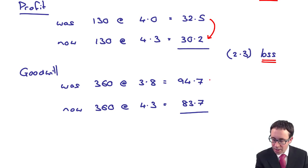So it was at 94.7. It's now at 83.7. So again, the difference is there is 11 is a reduction in the asset, which gives you a loss.